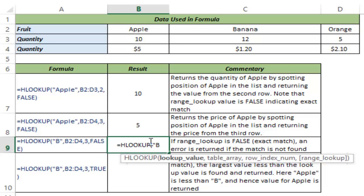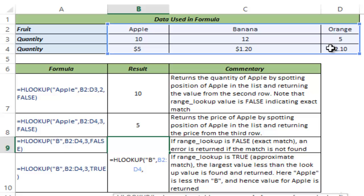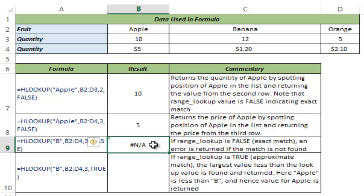Let me look for the alphabet B here in this table array and I say row index number as 3 and exact match 0. You can also type false or you can select it from the drop down and I hit control enter and you can see I have got an error here.